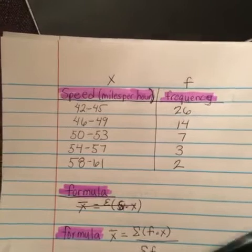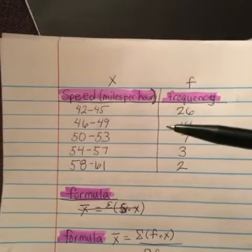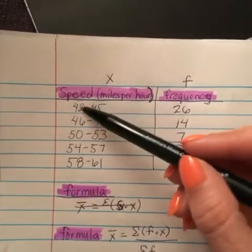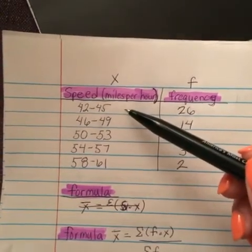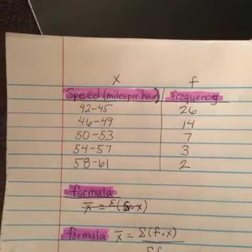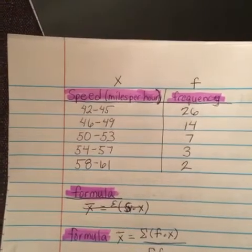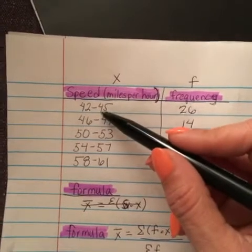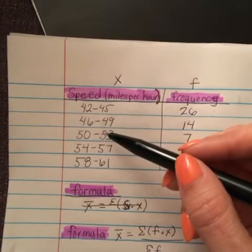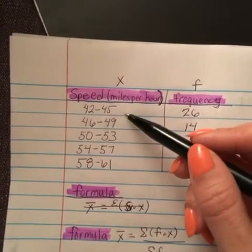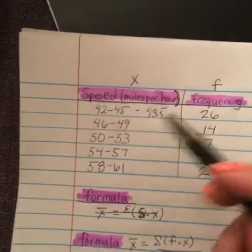The first thing we want to do in a problem like this is we want to find a midpoint for the speeds. To do that, we want to add each one together and then we will divide it by 2 to find the given midpoint for each one. For the first one, 42 plus 45, and then we would divide that by 2 which is 43.5.